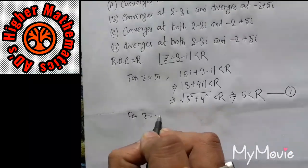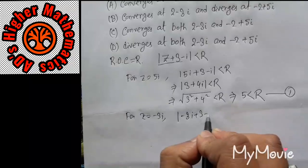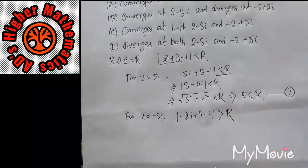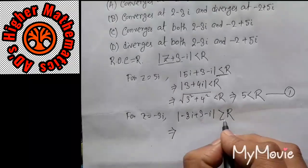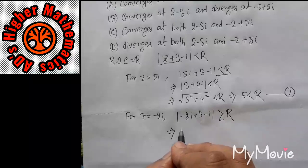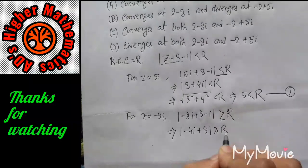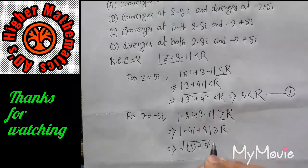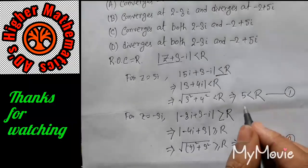For Z equal to minus 3i: |−3i + 3 − i| does not satisfy the inequality, so it must be greater than or equal to R. That is |3 − 4i| ≥ R, which is root of (16 + 9) = 5, giving 5 ≥ R.